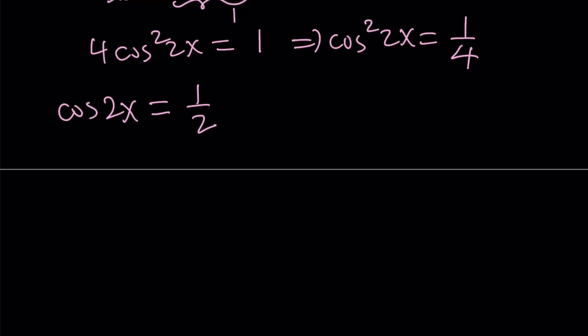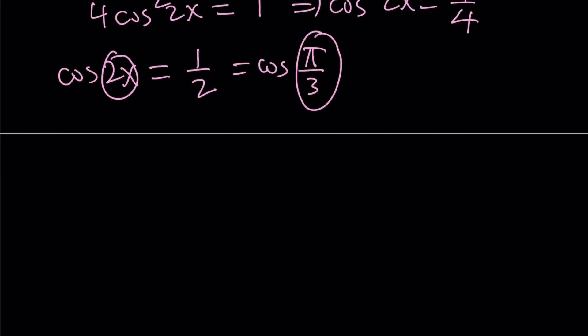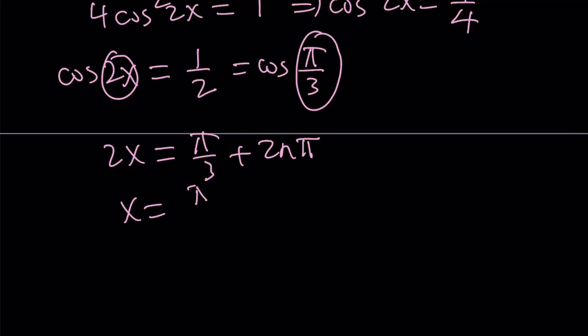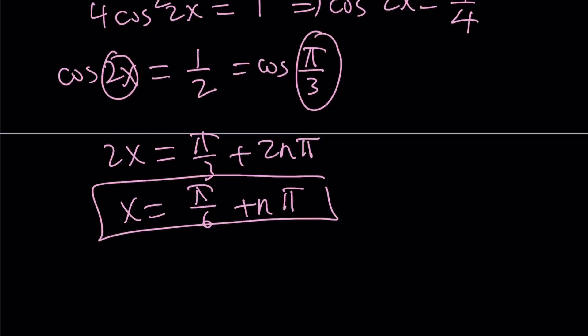For cosine 2x equals 1/2, we set it equal to the cosine of the smallest angle between 0 and 2π, which is cosine of 60 degrees, or π/3. Comparing 2x and π/3, we get 2x equals π/3 plus 2nπ, so dividing by 2 gives x equals π/6 plus nπ. That gives us a set of solutions. For specific solutions between 0 and 2π, replace n with 0, 1, and so on.